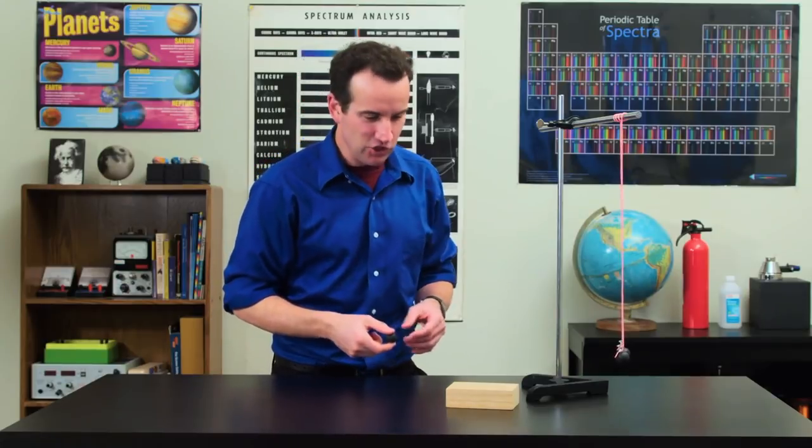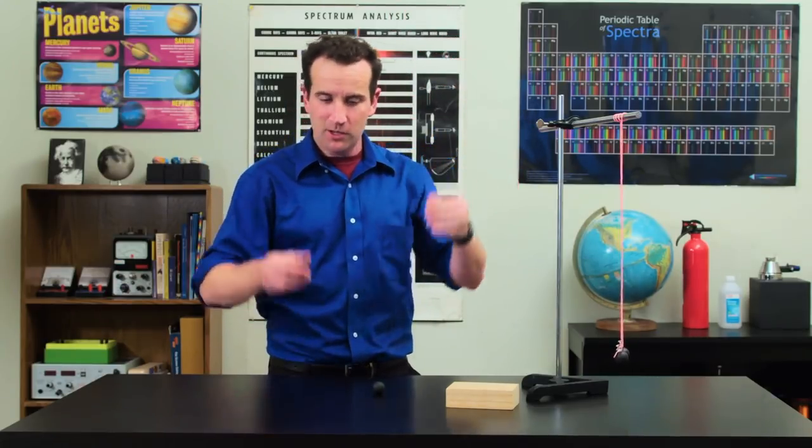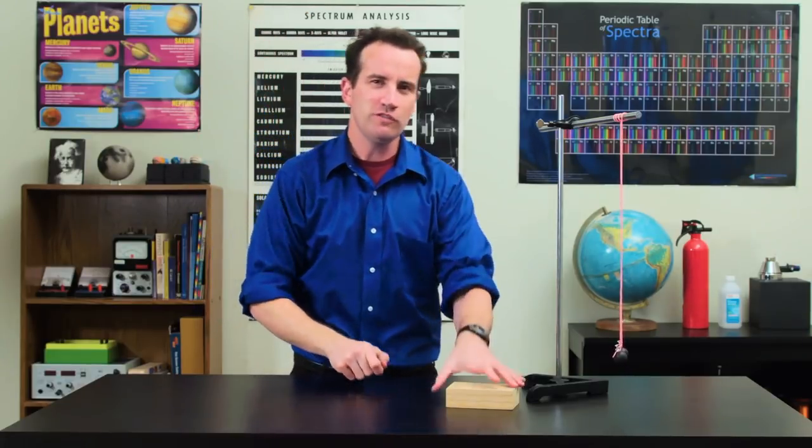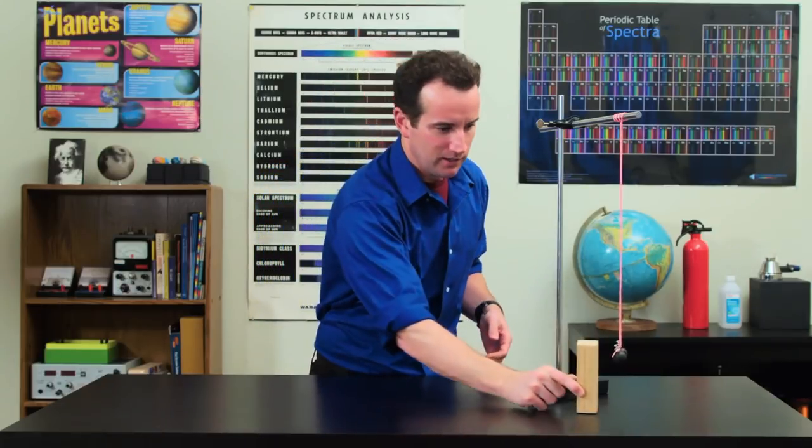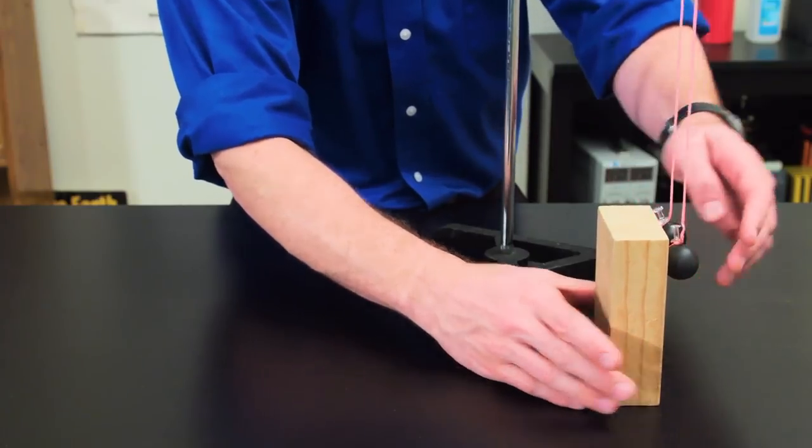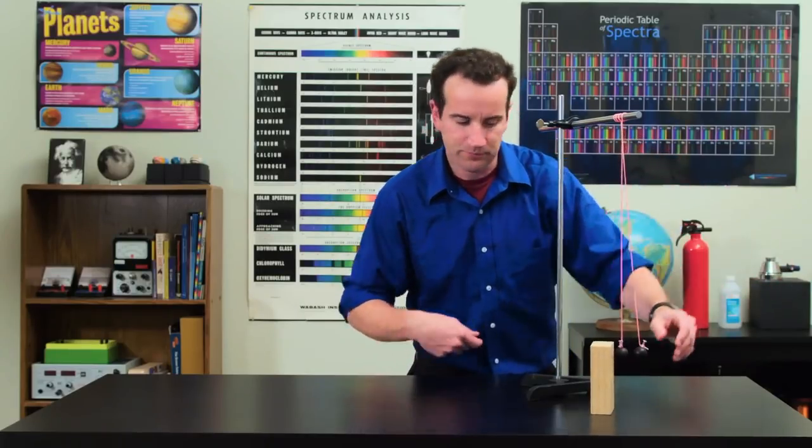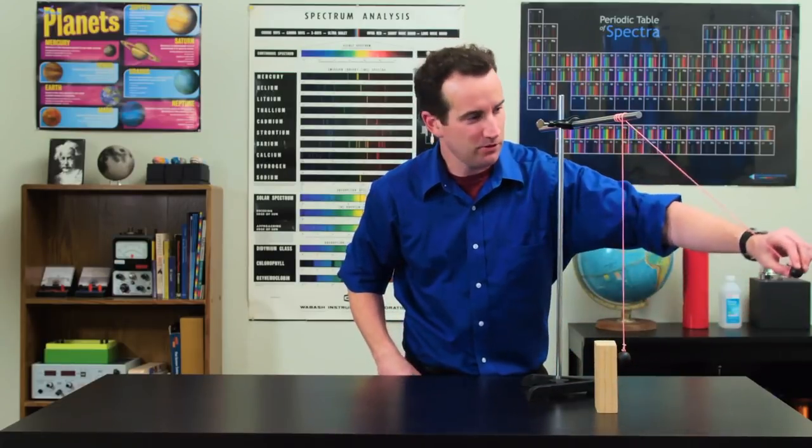Momentum is transferred by collisions. This ball does not bounce, but this ball bounces well. Which of these two is more likely to knock over the wood block? Make your guess. First, we test the one that doesn't bounce. Doesn't work. Now, the bouncy ball.